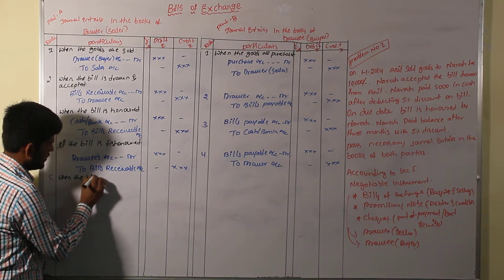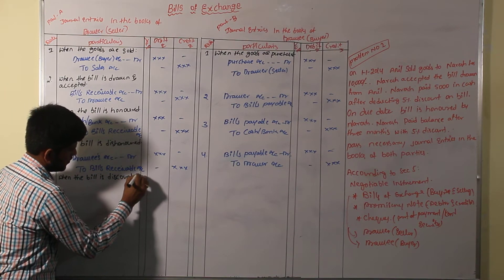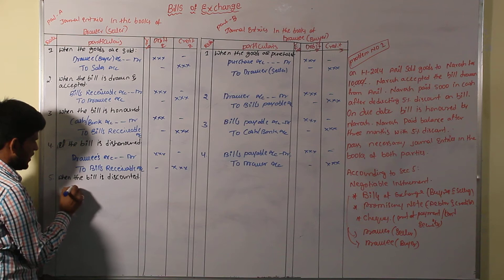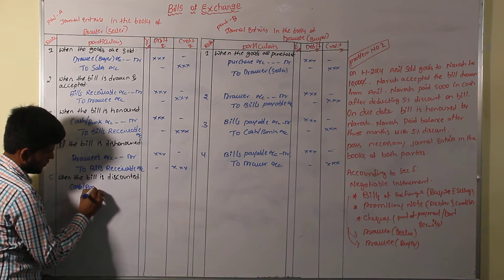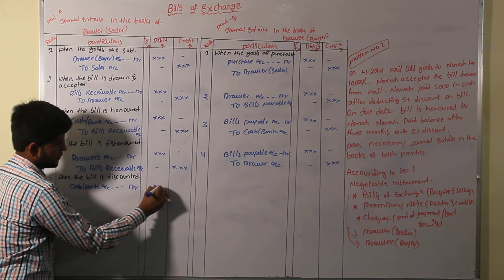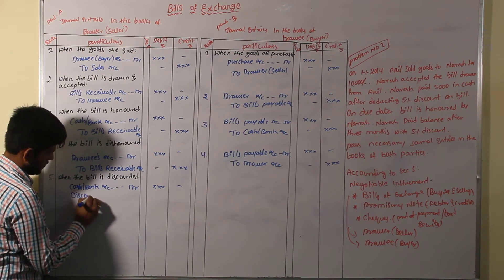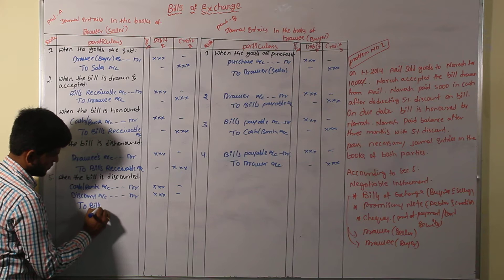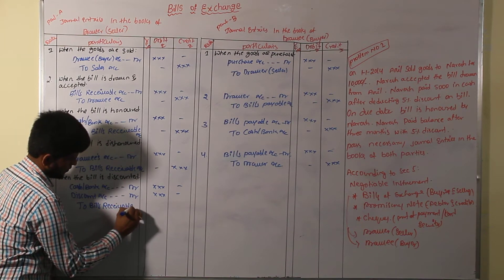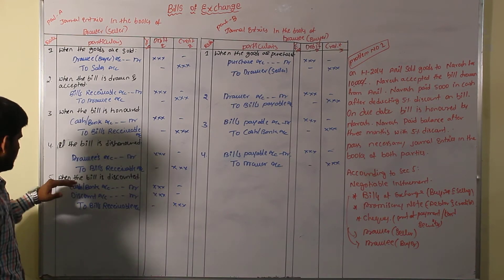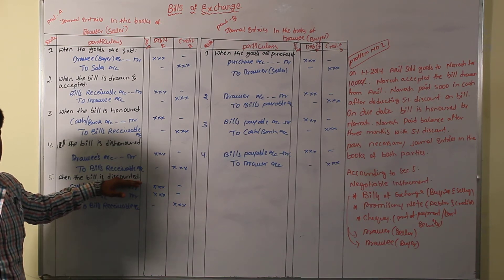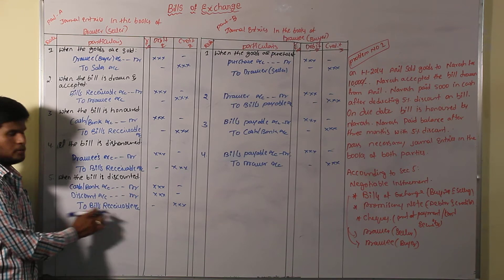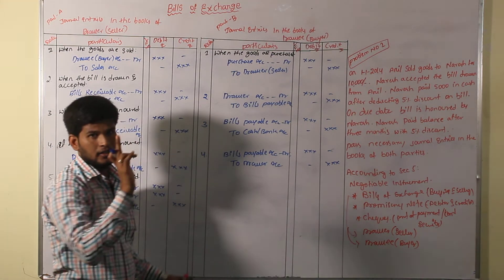When the bill is discounted, we have to enter the entry in the books of the drawer as: cash or bank account debit, discount account debit, to bills receivable account. When the bill is discounted, the entry is clearly given in the drawer's books. The same entry we have to convert in the drawee's books — no need to enter the entry there.